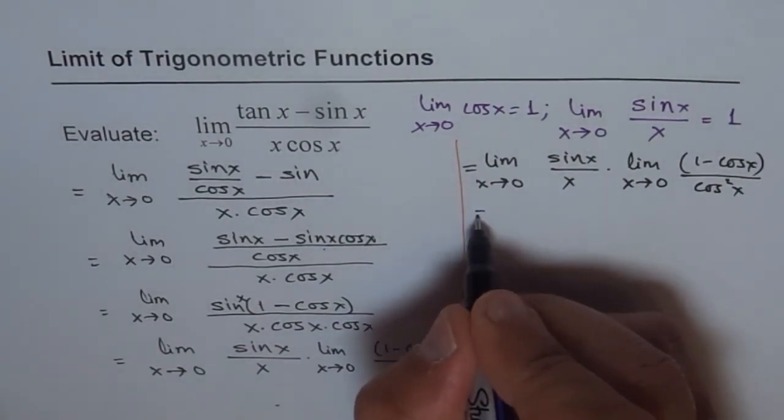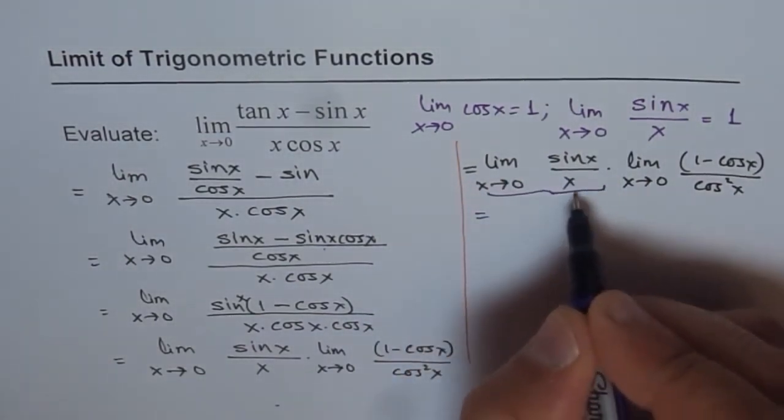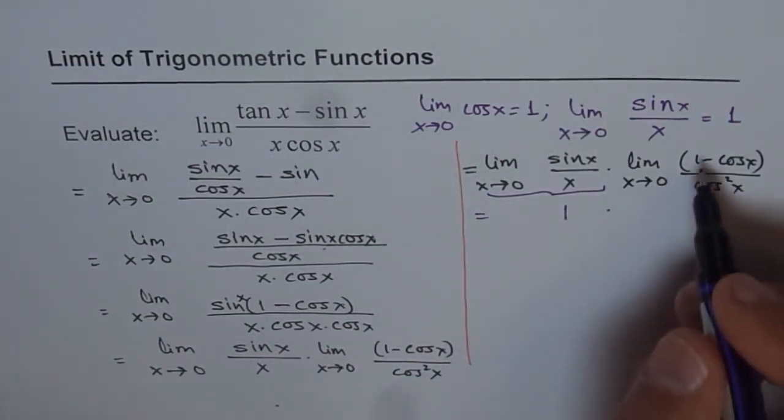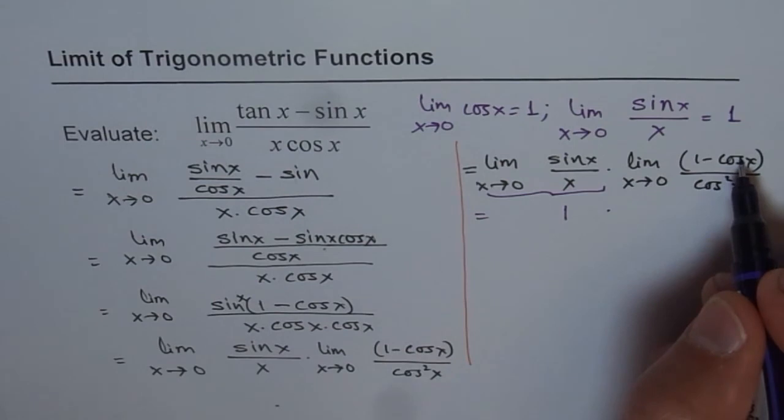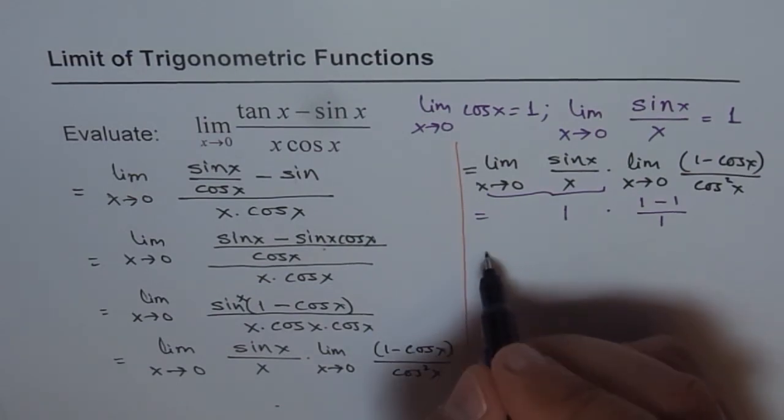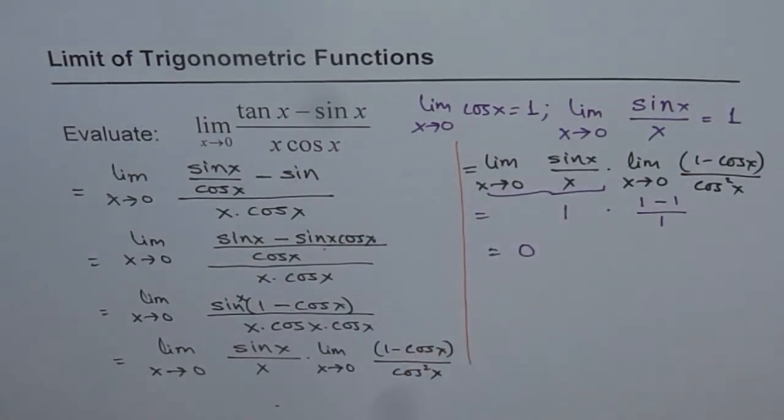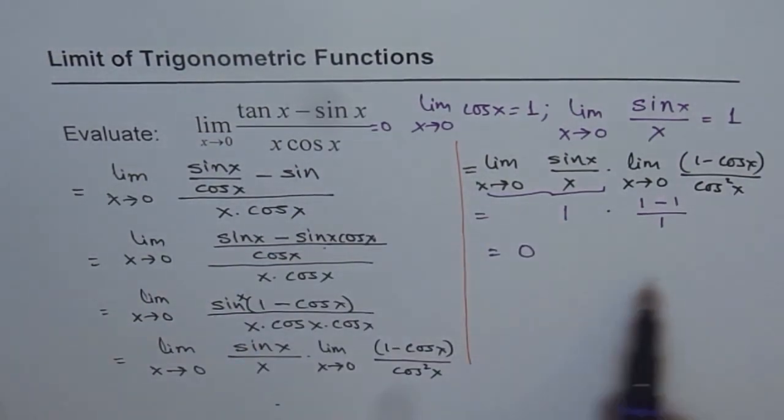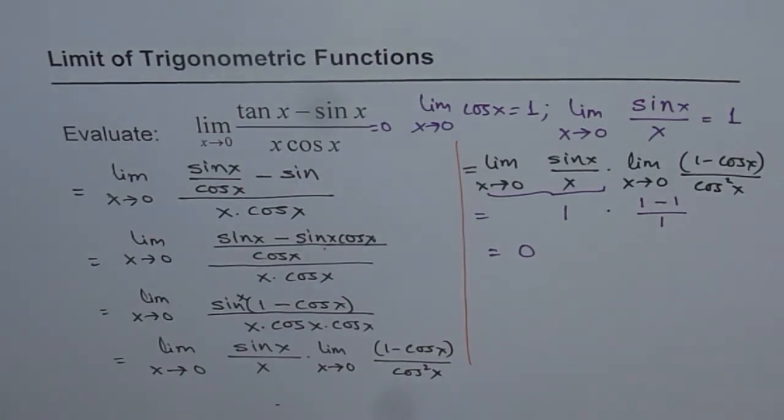So now if we do that, then what do we get? So for the first part, we get 1. 1 times this limit, when I put 0 here, I get 1 minus 1 divided by 1. So I get 1 minus 1 divided by 1. 1 minus 1 is 0. So we get 0 as our answer. So limit of this function is 0. So we can write down our answer here as 0. But that is how you can solve it. Thank you.